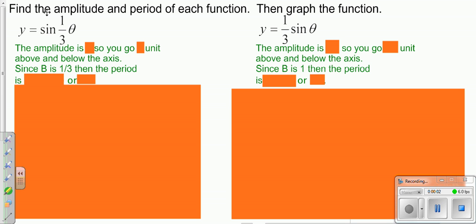So we want to find the amplitude and the period of each one of these functions, and then we want to go ahead and graph it. Remember, amplitude is looking at the number that's in front of sine. There's no number written here, so that means there's a 1 in front, so our amplitude is 1. So that means you're going to go one unit above and one unit below the horizontal axis that cuts your graph in half.